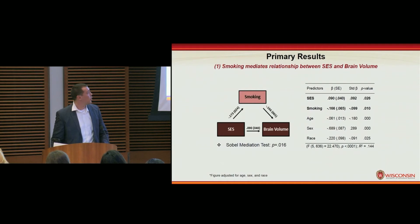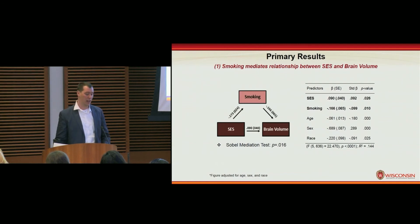With respect to brain volume, smoking accounted for a significant amount of variance that was being previously attributed to SES, which also can be seen by the table on the right showing the mediating effect of smoking on SES and brain volume.